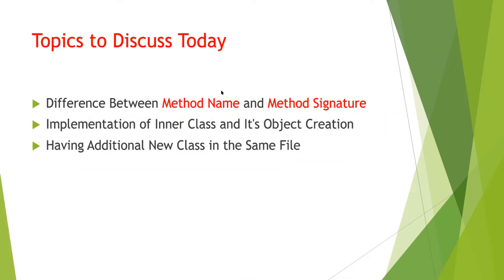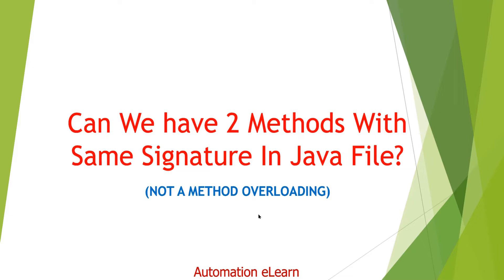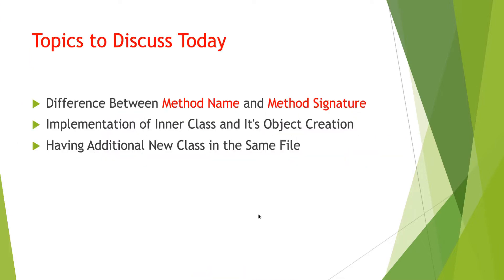To understand this we will discuss a couple of concepts. We will discuss the difference between method name and method signature, implementation of inner class and how to create an object of inner class, how to access methods implemented inside an inner class, and finally adding a new class to the same file with a method having the same signature.